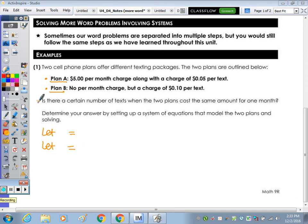Looking at the question, is there a certain number of texts? You're looking for the number of texts where your bills would, or your two plans, would cost the same. So let's let T equal the number of texts. You can use X and Y. And then what would the other variable be? Let's say C equals the monthly cost.